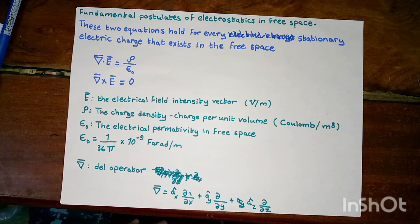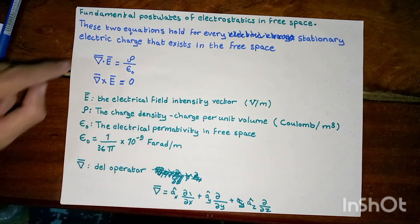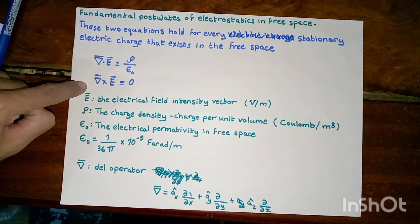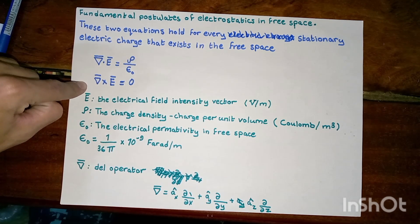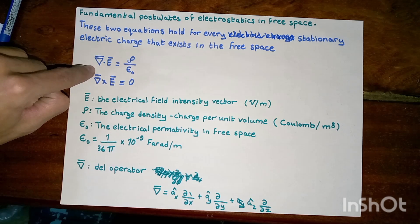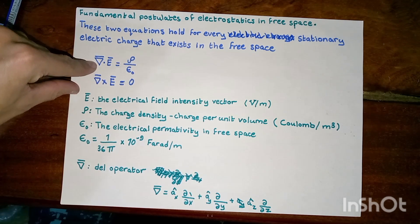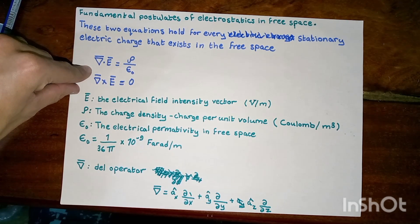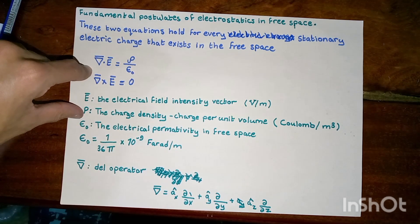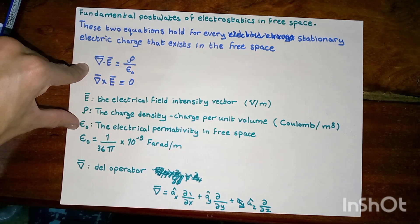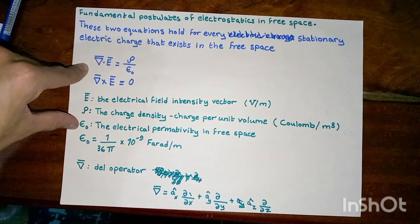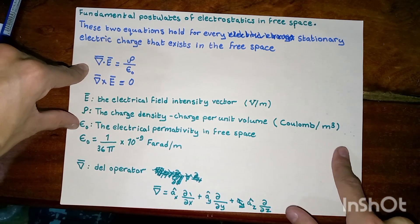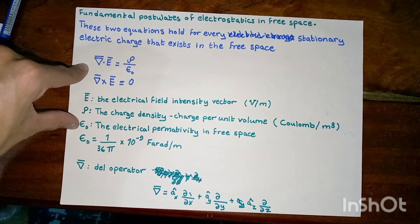These two equations specify the divergence and the curl of the electrical field intensity E. The first equation states that the divergence of E equals rho divided by epsilon sub-zero, where rho is the charge density, or the charge per unit volume, measured in coulombs per cubic meter.